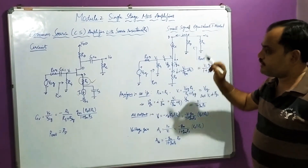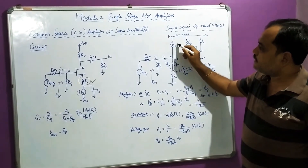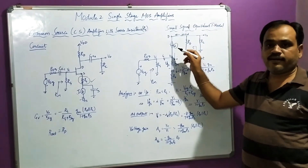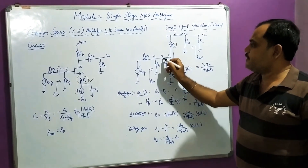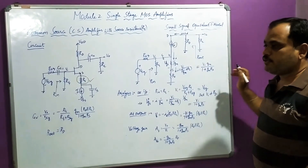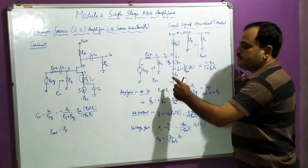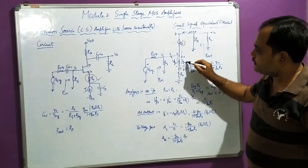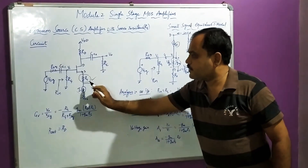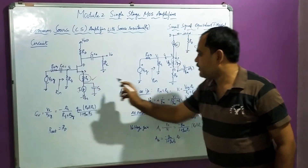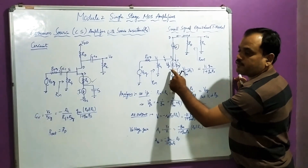The input side and output side remain the same. The current source, which was Gm times Vgs, is now current I — the drain current small signal is I. Since I am using a T-model, there is a short circuit here. Because of this short circuit, Va is not going to be equal to Vgs, due to the presence of one more resistor called 1/Gm. Because of the connection of series resistance RS, I am going to have an equivalent resistance 1/Gm in this equivalent model.